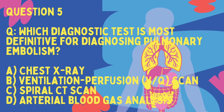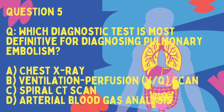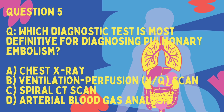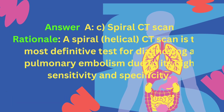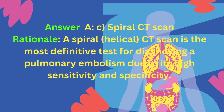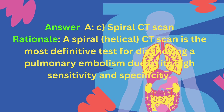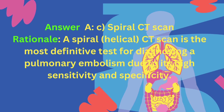Question 5. Which diagnostic test is most definitive for diagnosing pulmonary embolism? A. Chest X-ray, B. Ventilation-Perfusion (VQ) scan, C. Spiral CT scan, D. Arterial blood gas analysis. Answer: C, Spiral CT scan. Rationale: A spiral helical CT scan is the most definitive test for diagnosing a pulmonary embolism due to its high sensitivity and specificity. Thank you very much.